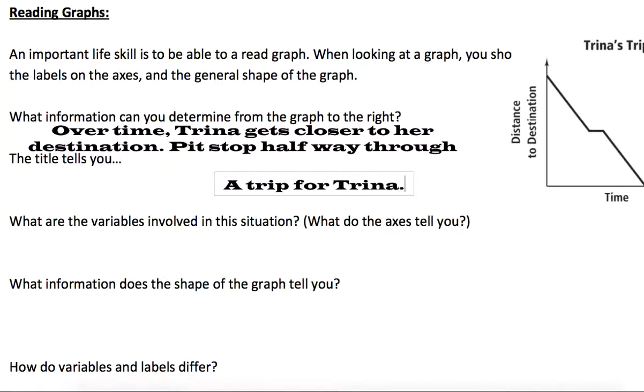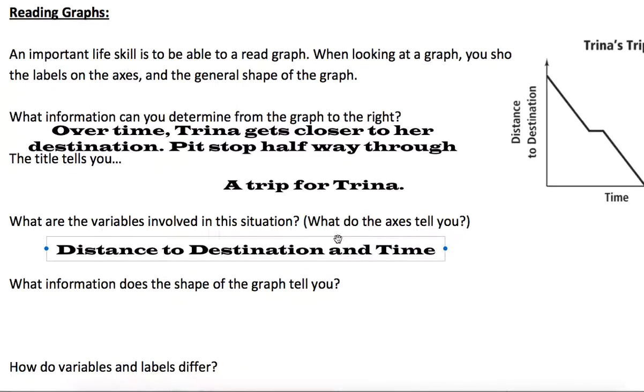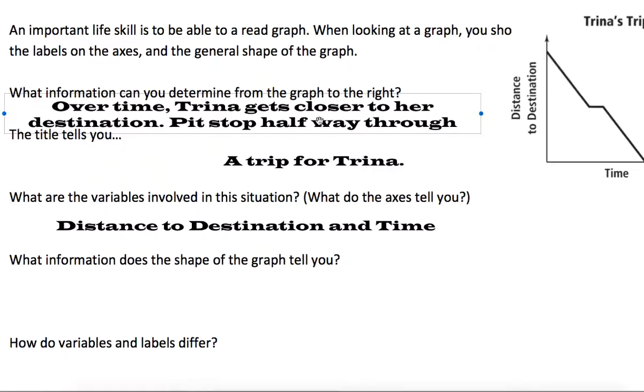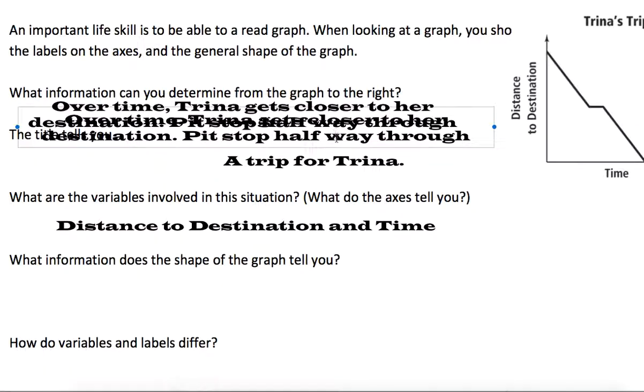The variables that we just talked about, the axes. We saw that the variable on the left was the distance to the destination, so we had that and time was the other variable seen here on the bottom axis. What information does the shape of the graph tell you? Well yeah, we kind of already talked about this.